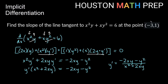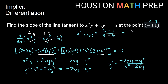Now we plug in x equals negative 3 and y equals 1. Negative 2 times negative 3 times 1 gives 6 for the negative 2xy term, minus y squared is 1 squared which is 1 — so the numerator is 6 minus 1 equals 5. In the denominator, x squared is negative 3 squared which is 9, plus 2xy is 2 times negative 3 times 1 which is negative 6 — so 9 minus 6 equals 3. We get 5 thirds as our slope of the tangent line at the point (negative 3, 1).